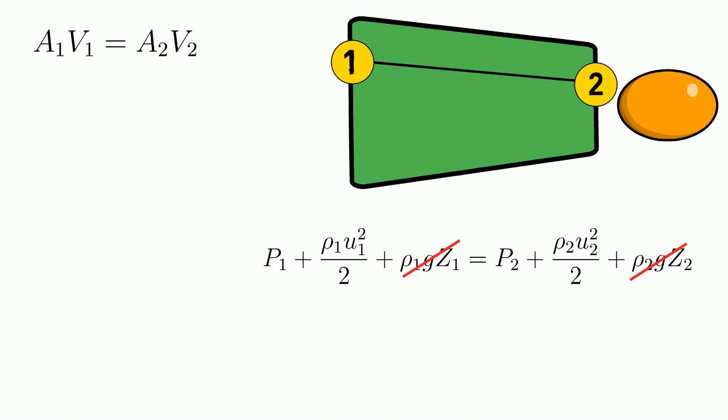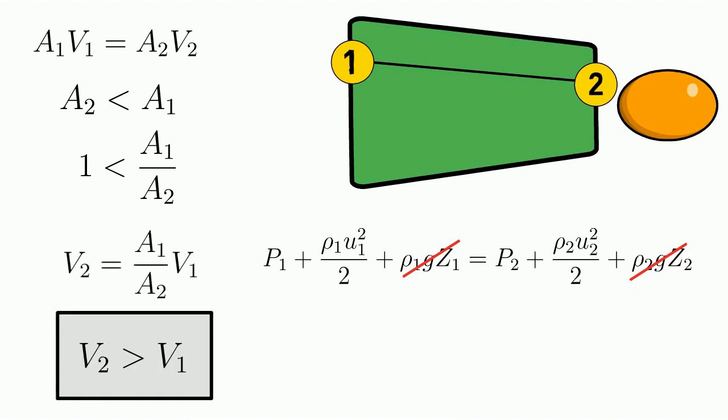An area at the second point is less compared to the first point. And from this, we can conclude that the velocity at point 2 is higher compared to the first point.